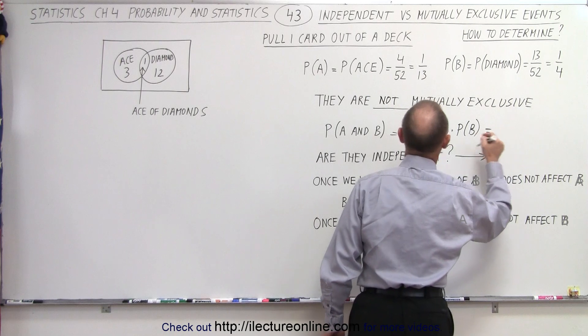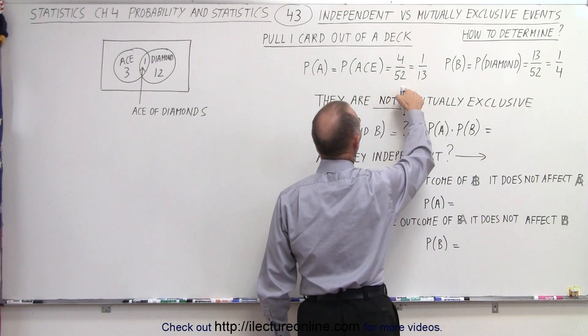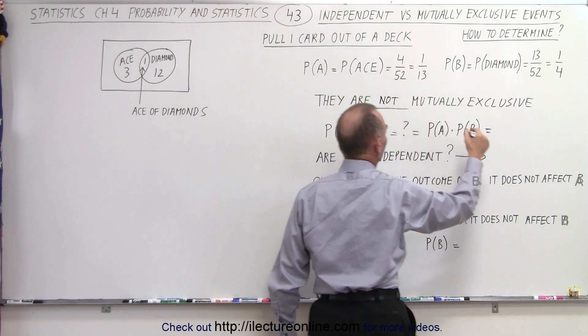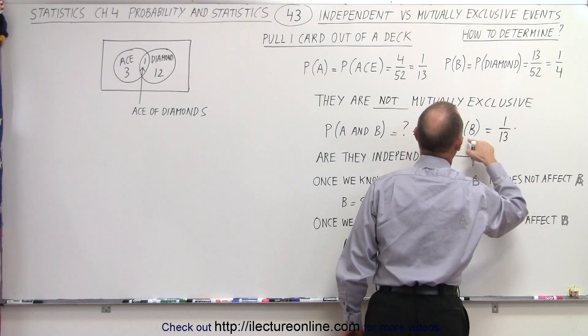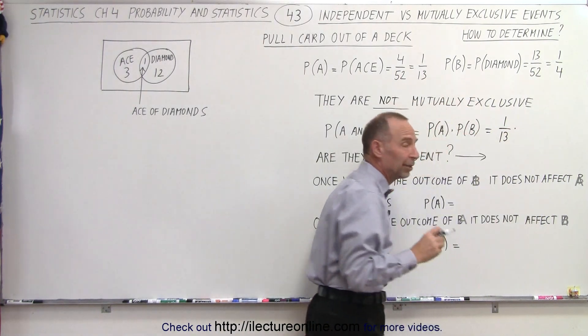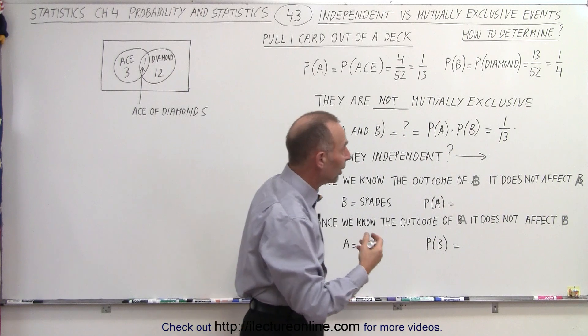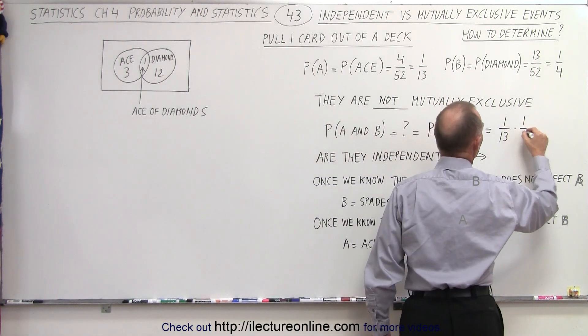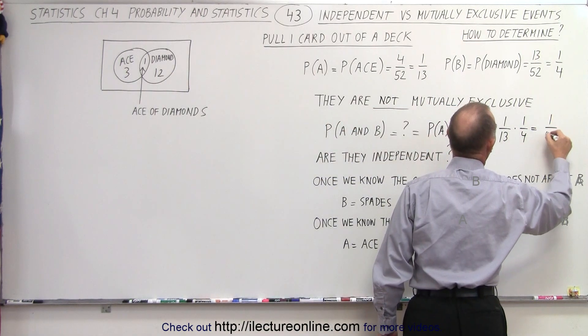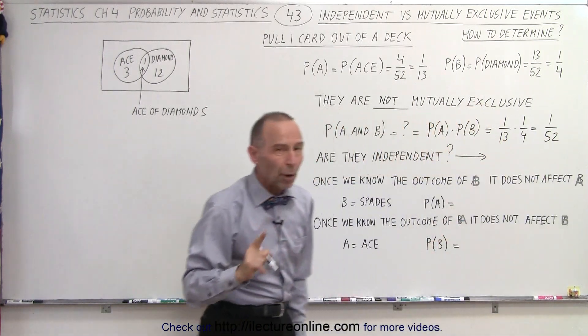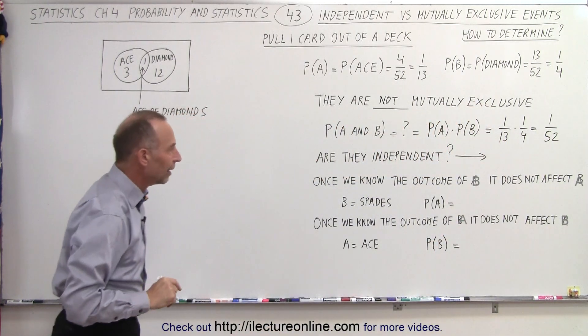And so here we can see that the probability of A, drawing an ace, is 4 out of 52 or 1 out of 13. And we multiply that times the probability of B, which is the probability of drawing a diamond, which is 1 out of 4. And you can see then when we multiply, we get 1 out of 52. There's only a single card that can be both an ace and a diamond.